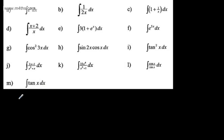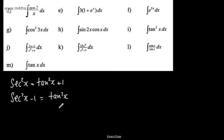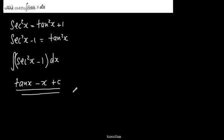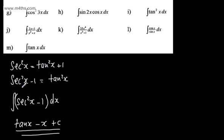Let's look at the next one: tan squared x. I don't really know what differentiates to give me tan squared x. But what I do know is that sec squared x equals tan squared x plus 1. I know that if I differentiate tan x, I get sec squared x. So I can rearrange: sec squared x minus 1 equals tan squared x. So instead of integrating tan squared x, I write that this is the integral of sec squared x minus 1 dx. The integral of sec squared x is tan x, and integrating minus 1 gives minus x, so the answer is tan x minus x plus a constant.